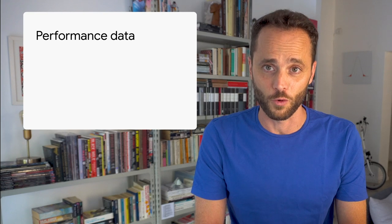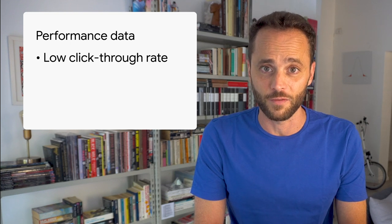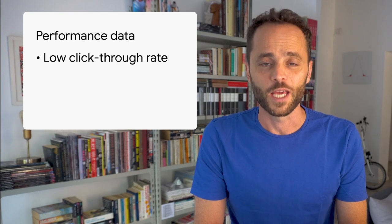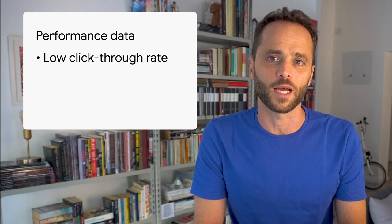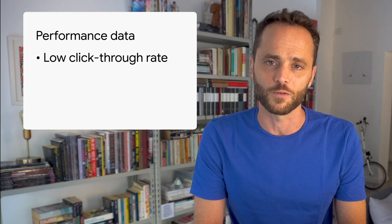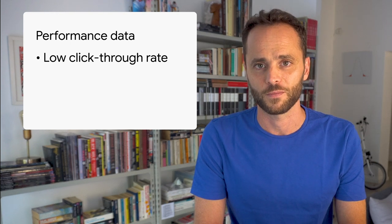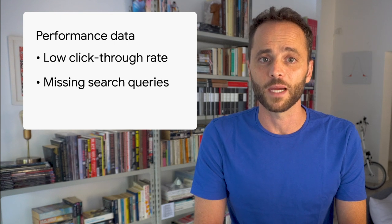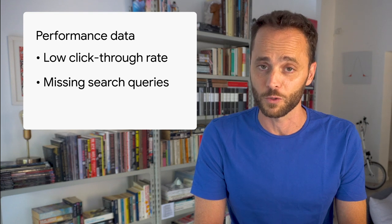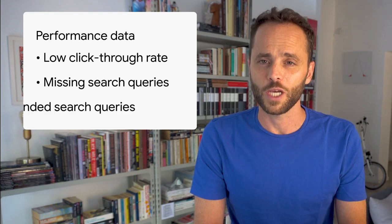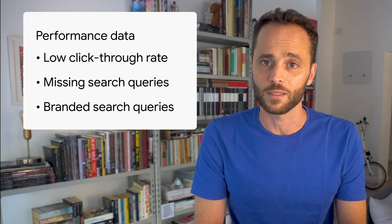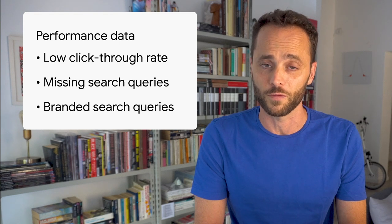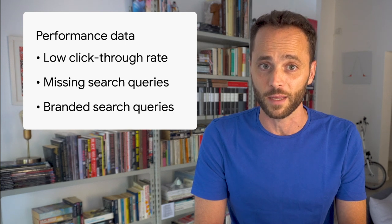Here are three things to look for when reviewing your performance data. If the number of impressions is significantly higher than clicks for a query or page, you might need to create better page titles and descriptions to make your site more attractive to users in Search Results. If search queries that you expect to see don't appear, your site might not have enough useful content relevant to those queries. Check how many queries show your site when the user does or does not include your nonprofit's name. These might show interesting areas where people are searching for content directly related to your site.